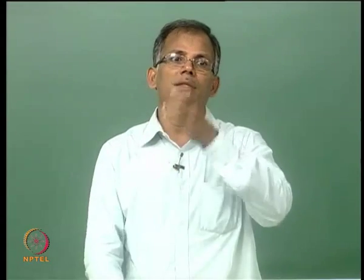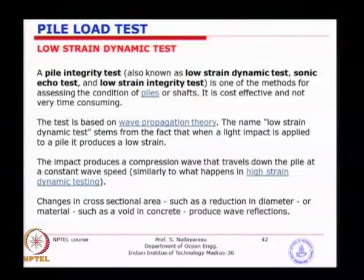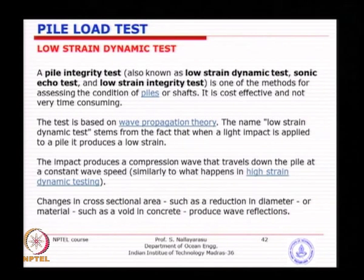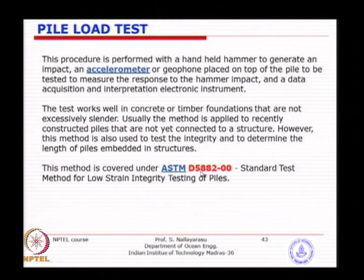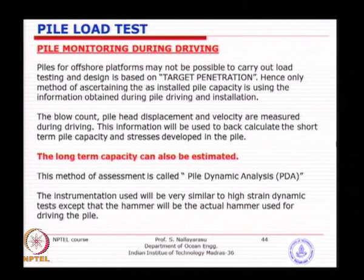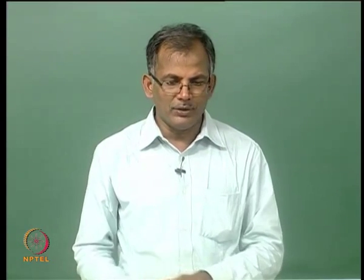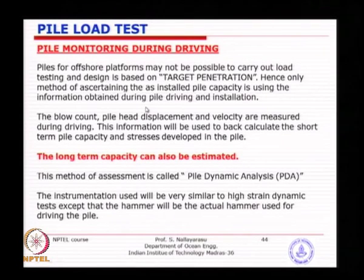Low strain dynamic testing can also be used for steel piles where the pile is broken — for example at a welded connection in the middle — to find out whether the stress wave is transmitting further or reflecting from that interface. The procedure is almost similar to high strain dynamic testing; only the energy of impact is smaller. That means you can use a small hammer of a few kilograms weight instead of a real driving hammer. The procedure is given in ASTM D5882.